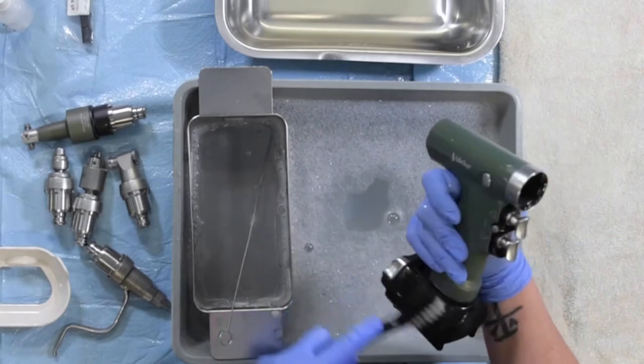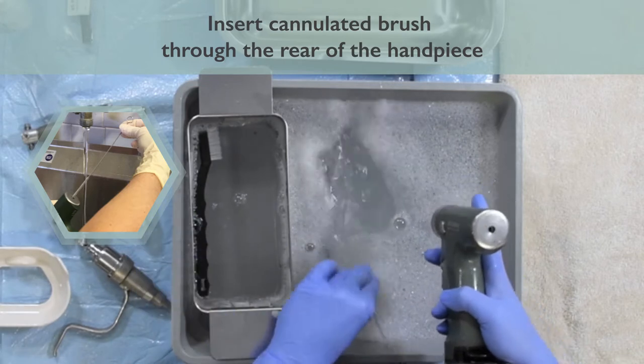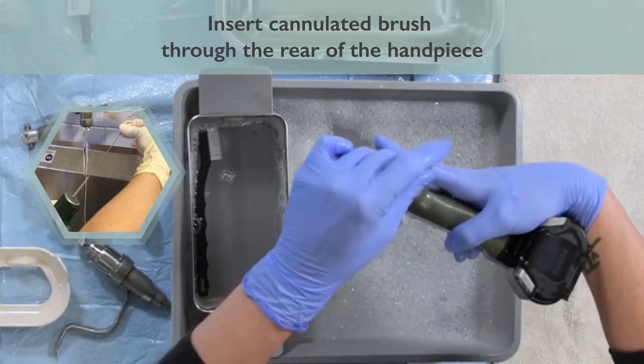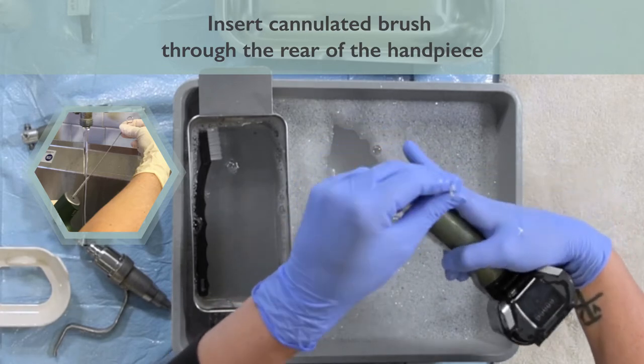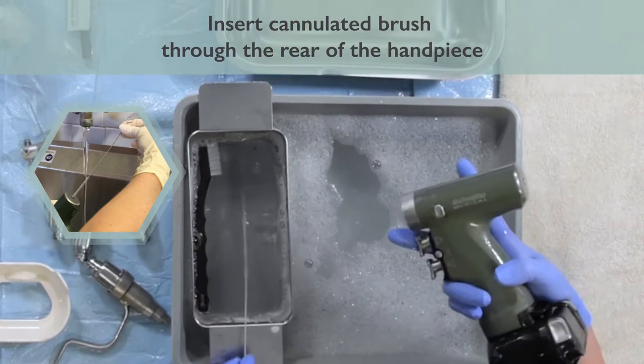Don't forget to clean your housing as well, and use your soft cannulated brush to clean the cannula of your hand piece. Insert the brush into the back of the hand piece to the front gently, and repeat the process until the brush comes out clean.